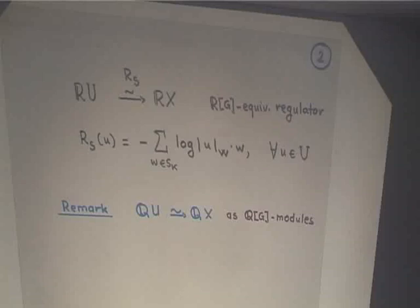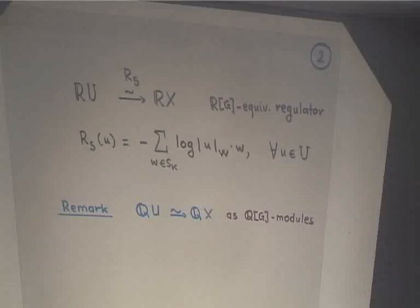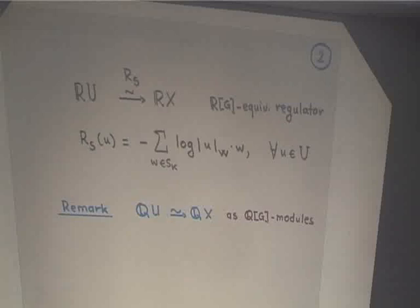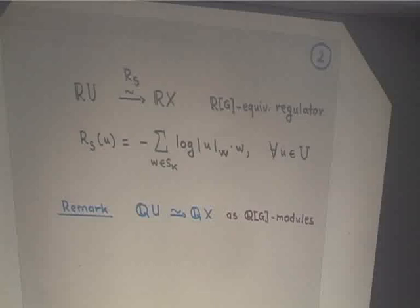Nevertheless, if you tensor U and X with R (the real numbers), they become canonically isomorphic as R[G]-modules, and the isomorphism is given by this regulator map, which depends on S. It's minus the sum for all W in S_K of the logarithm of a normalized absolute value associated to W, evaluated at u times W for every u in capital U, extended by R-linearity. This gives an R[G]-isomorphism — the G-equivariant regulator map.